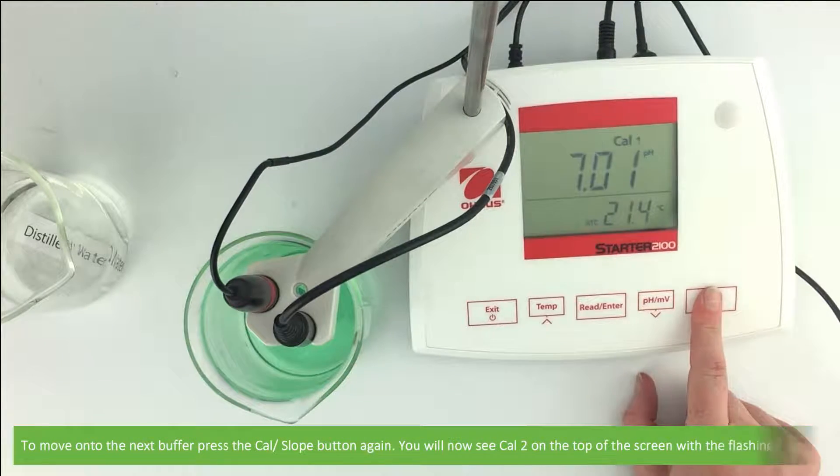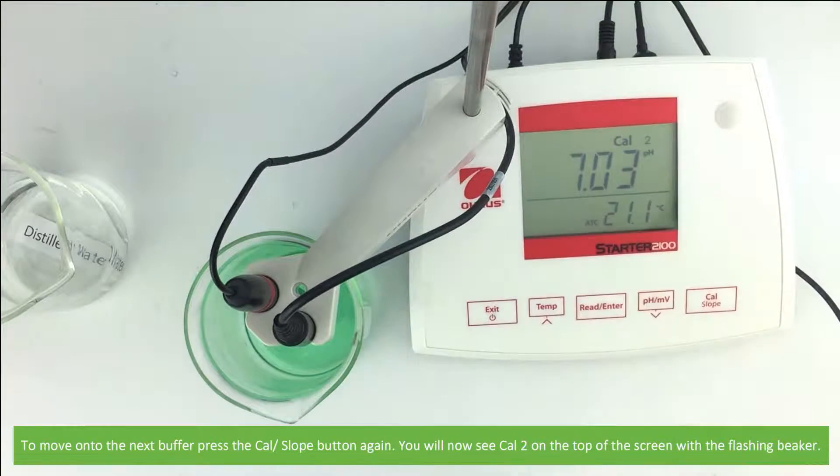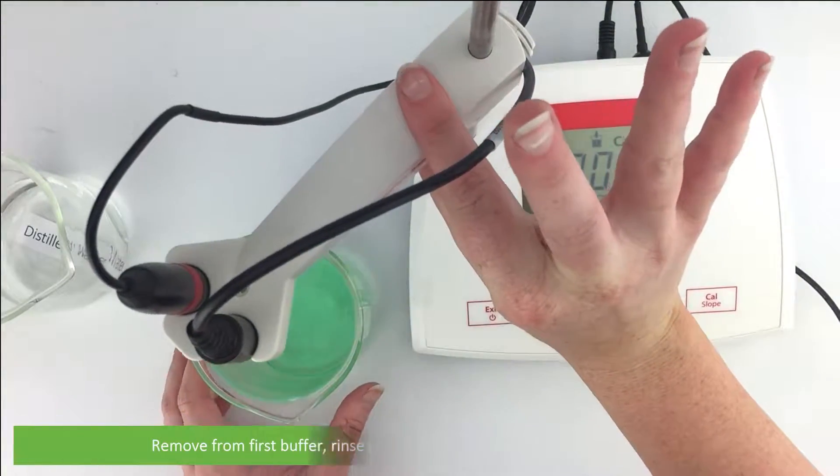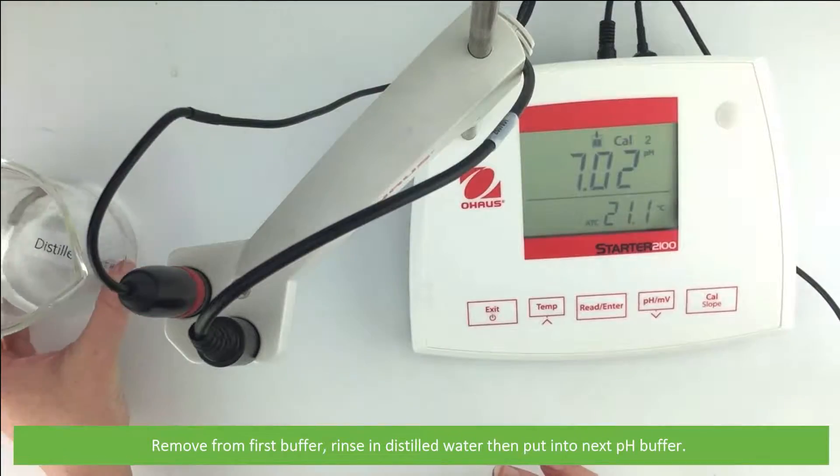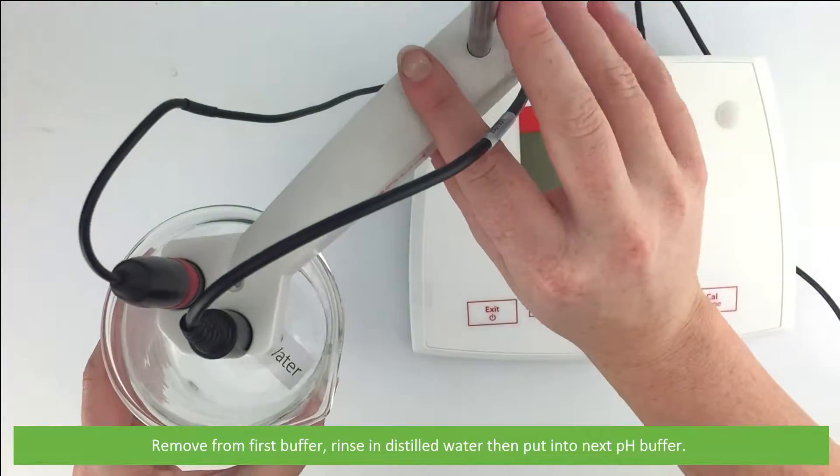To move on to the next buffer press the cal slash slope button again. You will now see cal 2 on the top of the screen with a flashing beaker. Remove the electrode from the first buffer, rinse in distilled water, then put into the next pH buffer.